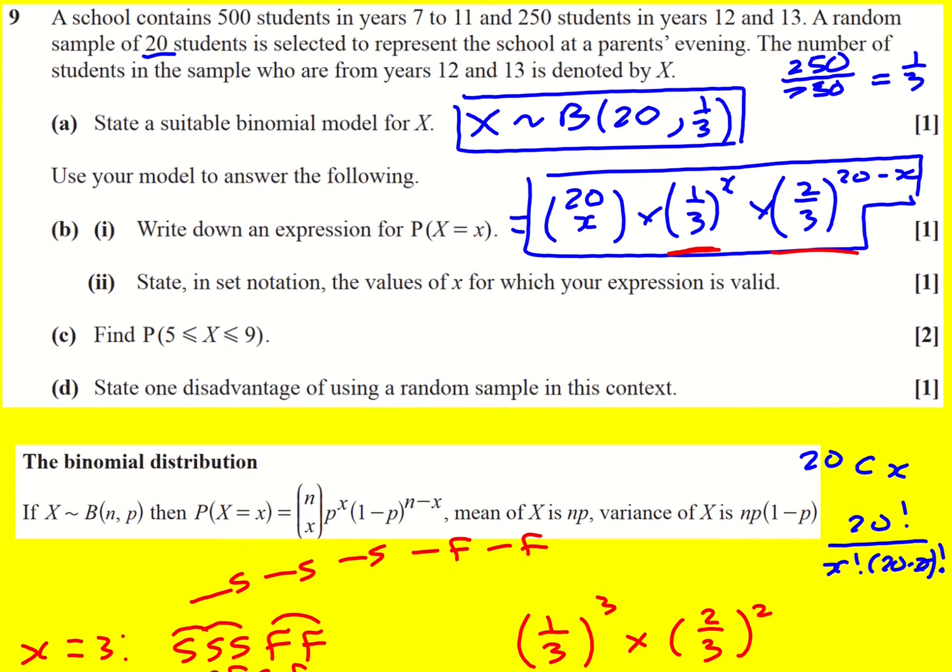So let's look at the set notation, the values of x for which your expression is valid. Now this seems quite simple if you know your set notation. Set of x such that x is between 0 and 20 because it can't be negative, it can't be 120, but there's actually a catch here. I gotta say it actually caught me out.